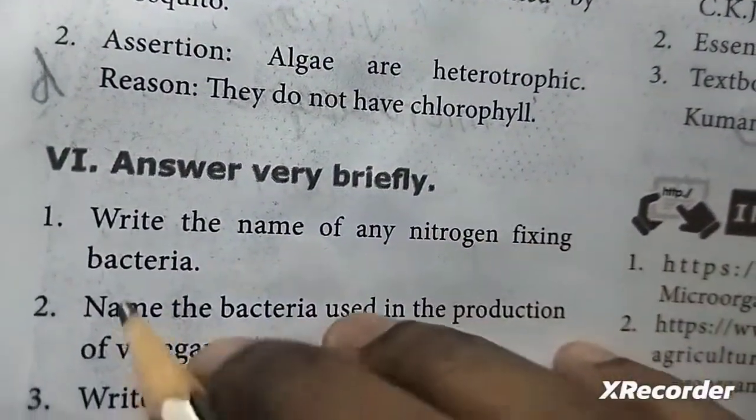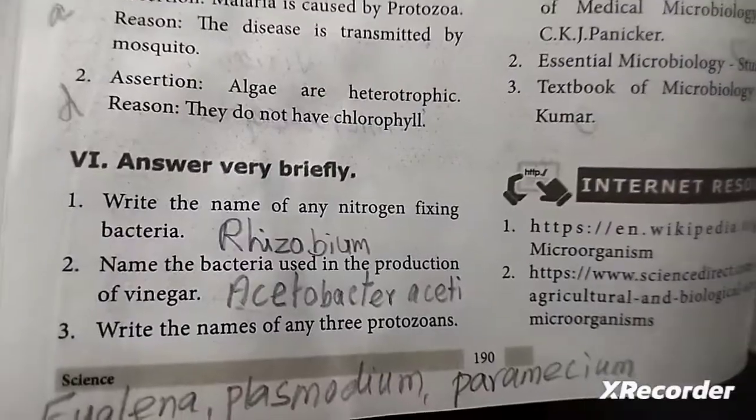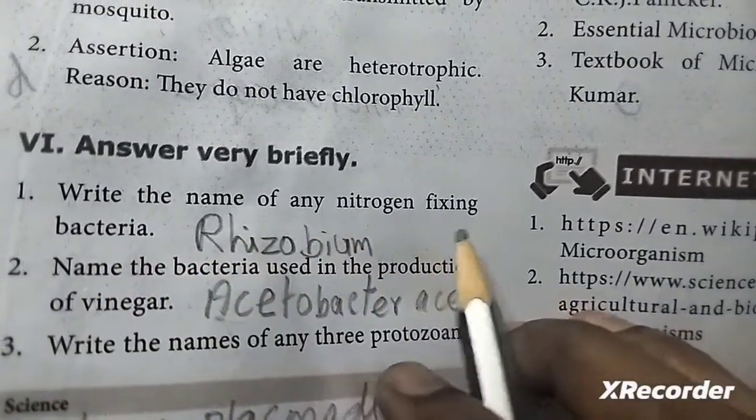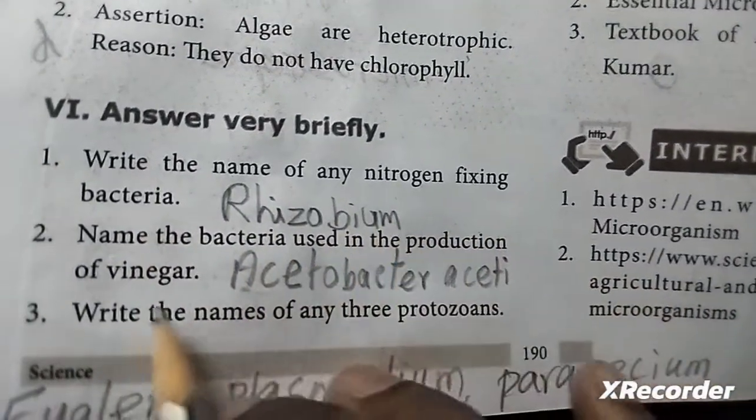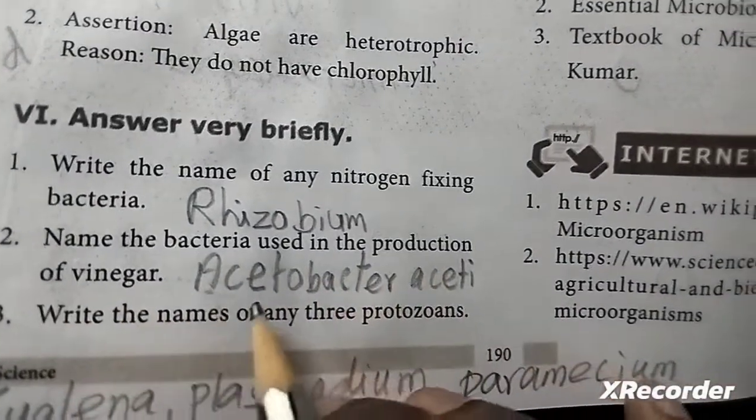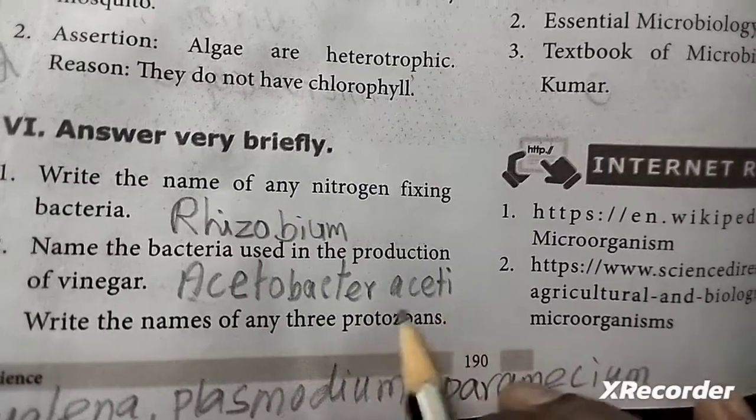Answer very briefly. First question: write the name of any nitrogen fixing bacteria - rhizobium. Second one: name the bacteria used in the production of vinegar - acetobacter.